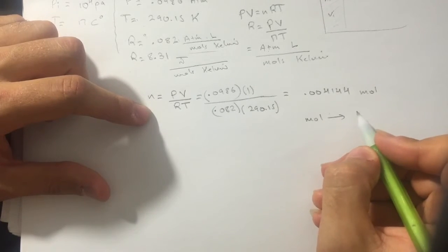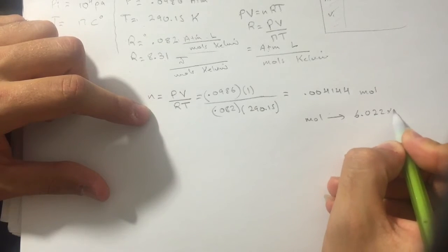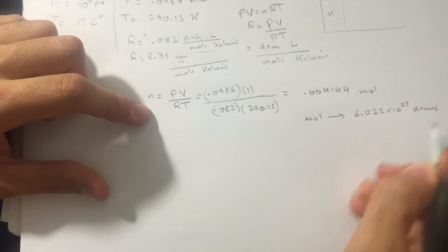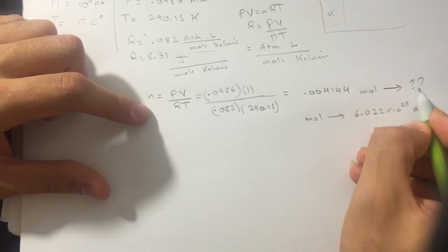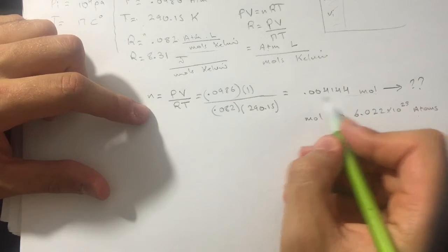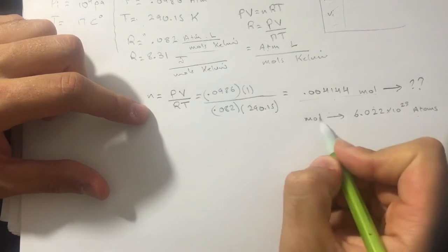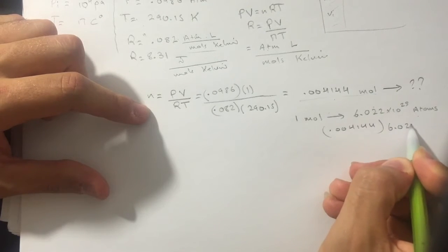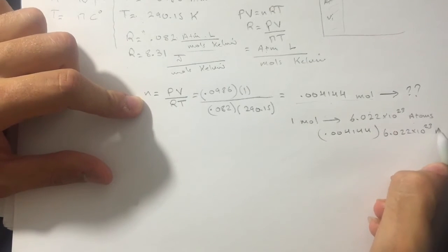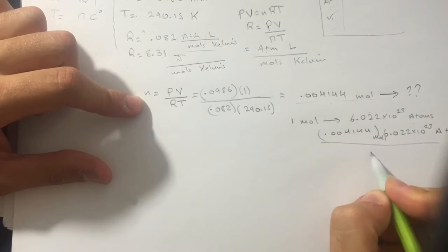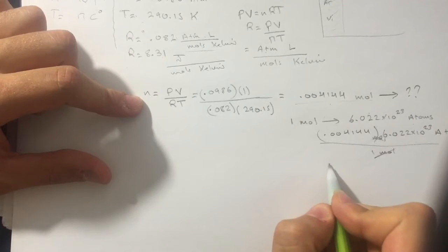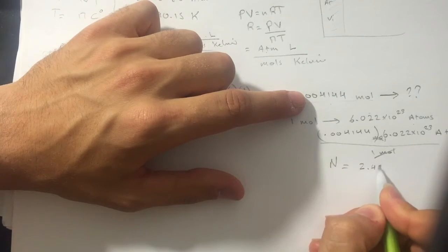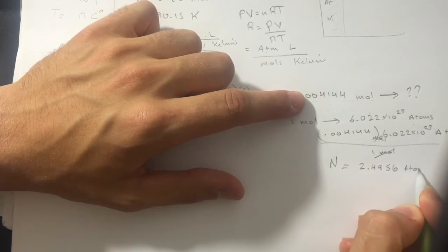Each mole contains Avogadro's number, which is 6.022 times 10 to the power 23 atoms per mole. So to find how many atoms are in 0.004144 moles, multiply: 0.004144 times 6.022 times 10²³ divided by 1 mole. The mole units cancel, giving you the number of atoms, capital N, which equals 2.4956 times 10 to the power 21 atoms.